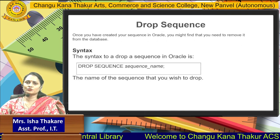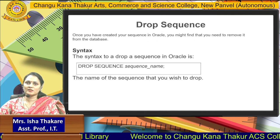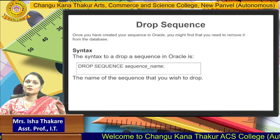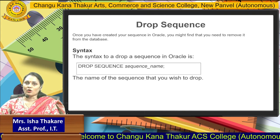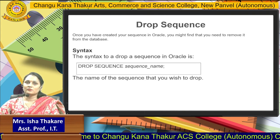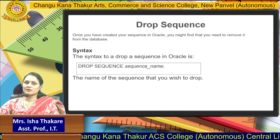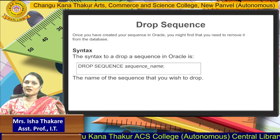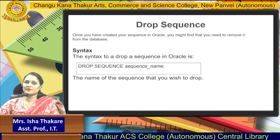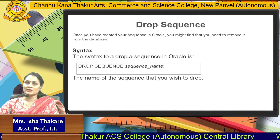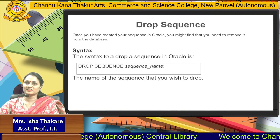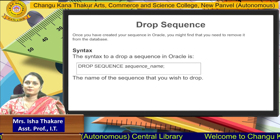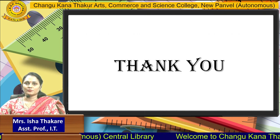To drop a sequence, we use the DDL statement DROP SEQUENCE followed by the sequence name. The supplier_sequence that we created will be dropped using the DROP SEQUENCE statement. Thank you.